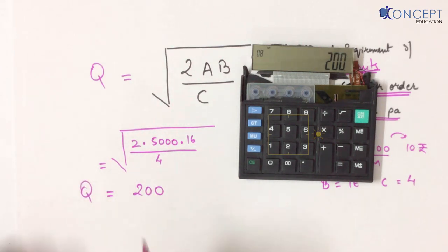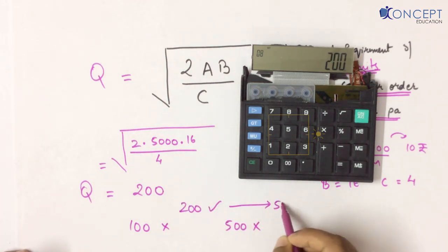This means I shouldn't order 100 at a time, or 500 at a time. That was already decided. I should order 200 at a time. For my annual requirement of 5000 units, I should order them 200 at a time. Now, is this correct or not? Let's test this in the next video.